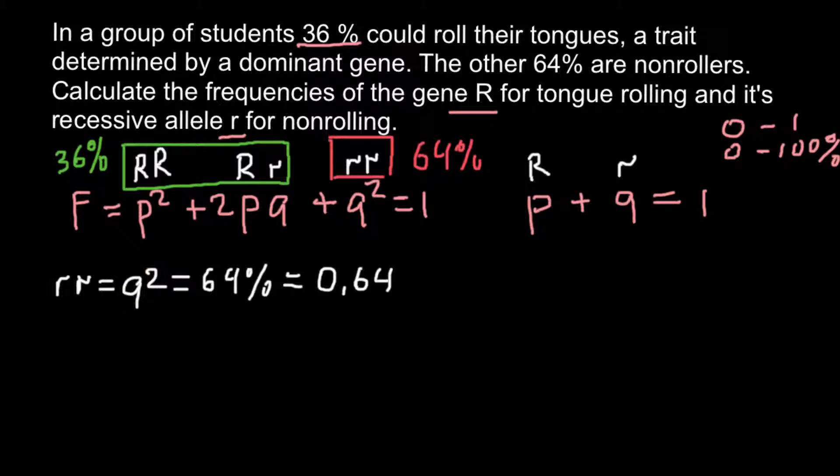So how are we going to find q? We have q squared and we need to find frequency q. This is very easy—we have to take the square root of this number. So the frequency of the recessive allele r would equal q, which equals the square root of 0.64.